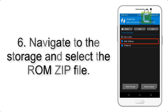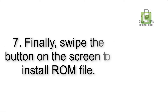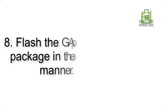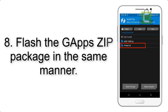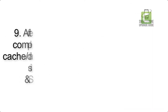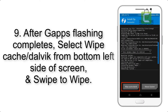Step 5: Go back to the recovery main screen and tap on the Install button. Step 6: Navigate to the storage and select the ROM zip file. Step 7: Finally, swipe the button on the screen to install the ROM file.